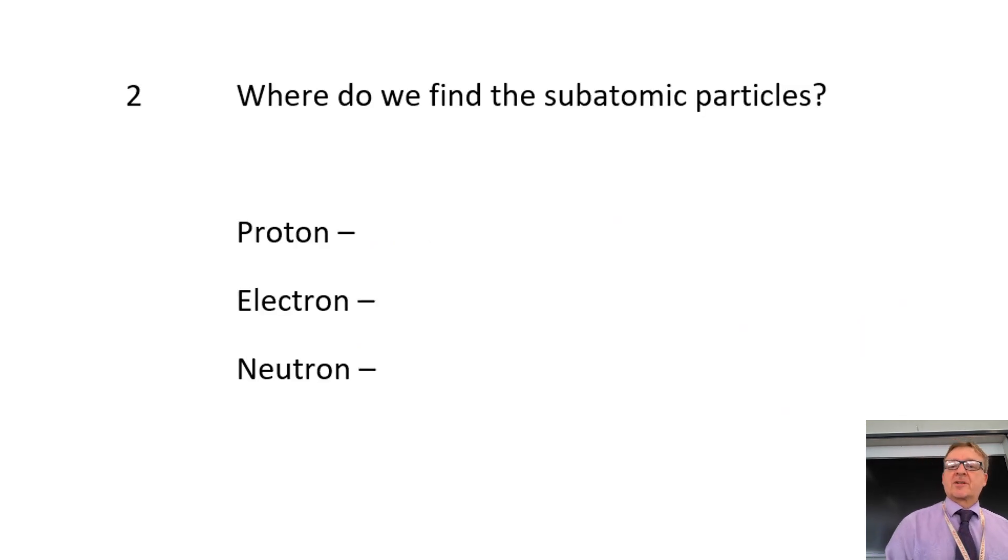Where do we find the subatomic? So sub means basically smaller than the atom itself. Protons are in the nucleus. Electrons can be found in the shells. And the neutrons can also be found in the nucleus. So you've got the nucleus, which is the middle bit, where the protons and neutrons are. And then the shells going around the outside.